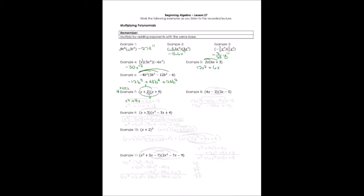Inside terms: 2 times x gives us 2x. And last terms: 2 times 9 gives plus 18. When we use FOIL, we don't miss anything — we do four multiplications, then combine like terms. The like terms are in the middle: 9x and 2x combine to give 11x, and we end up with a trinomial.